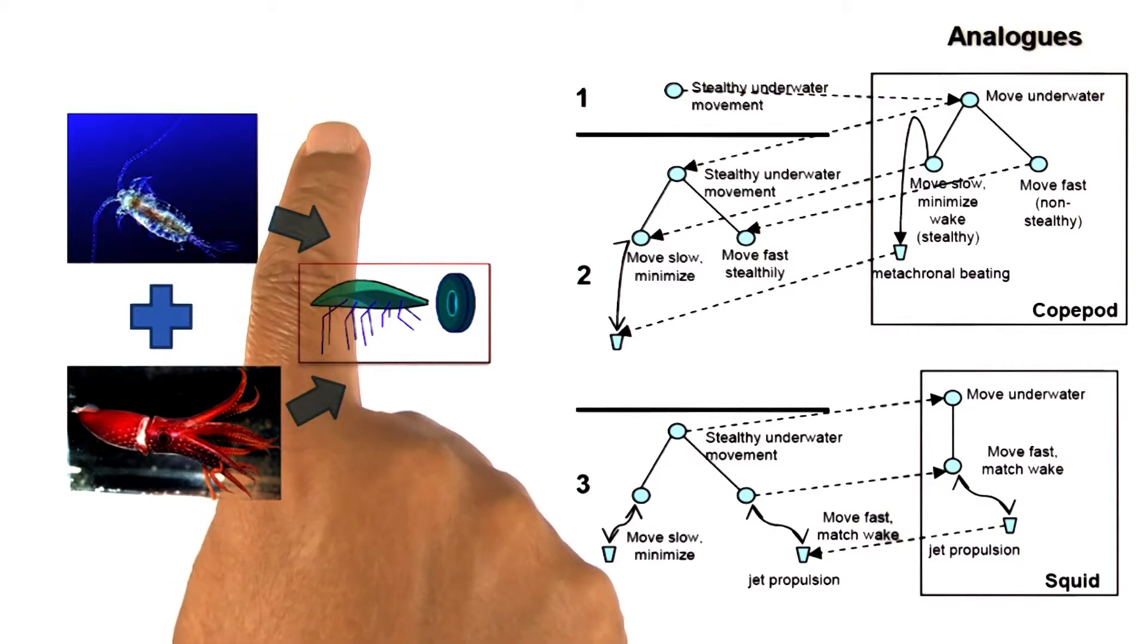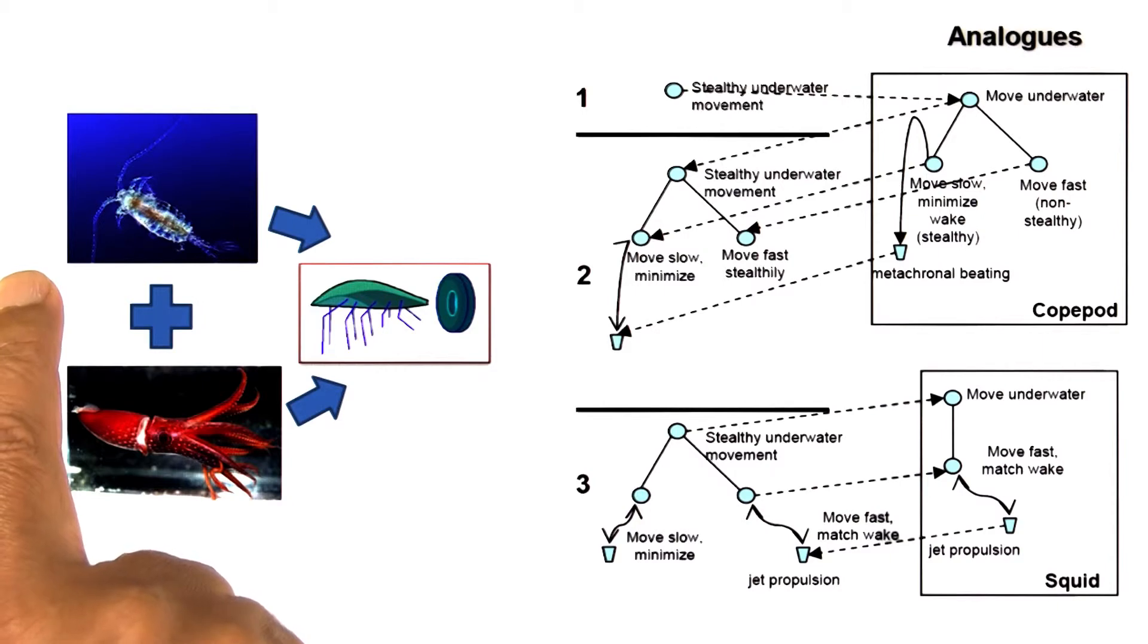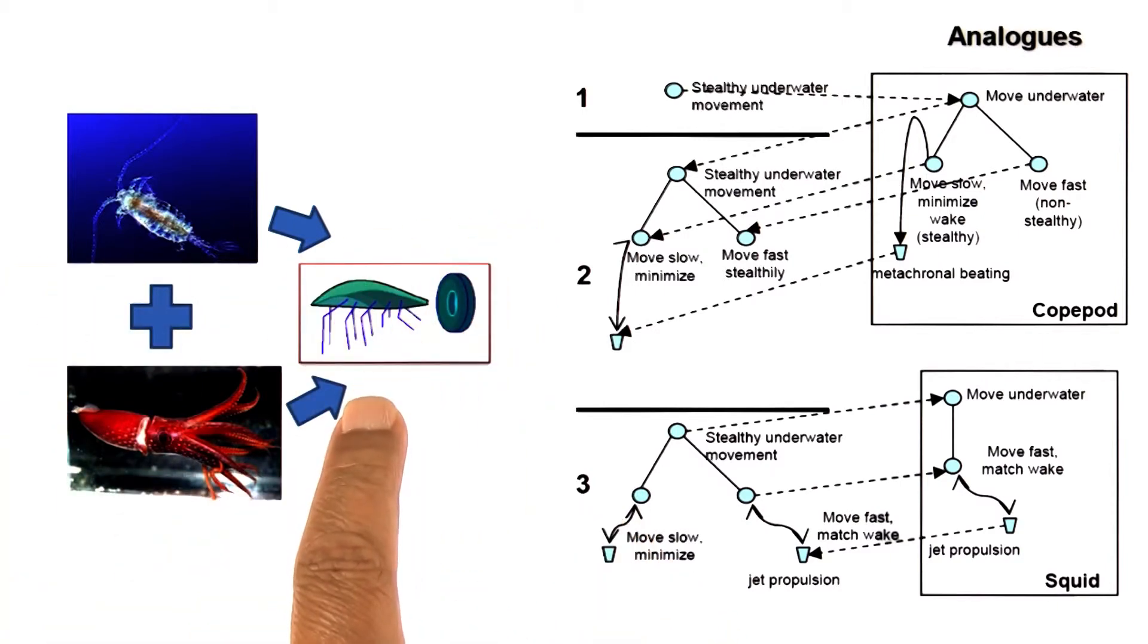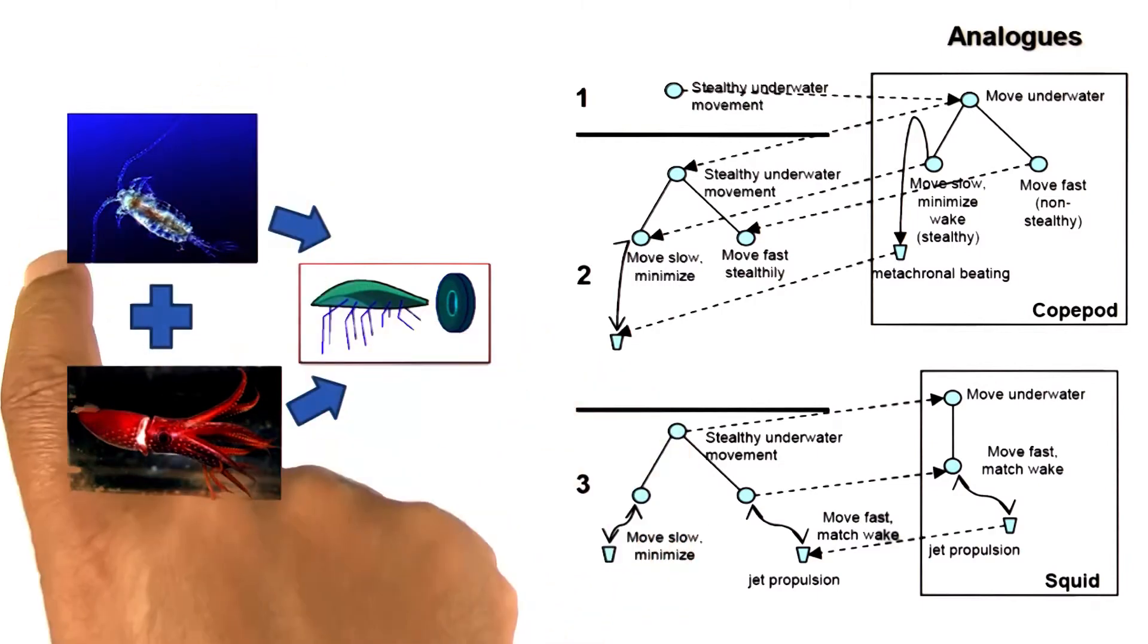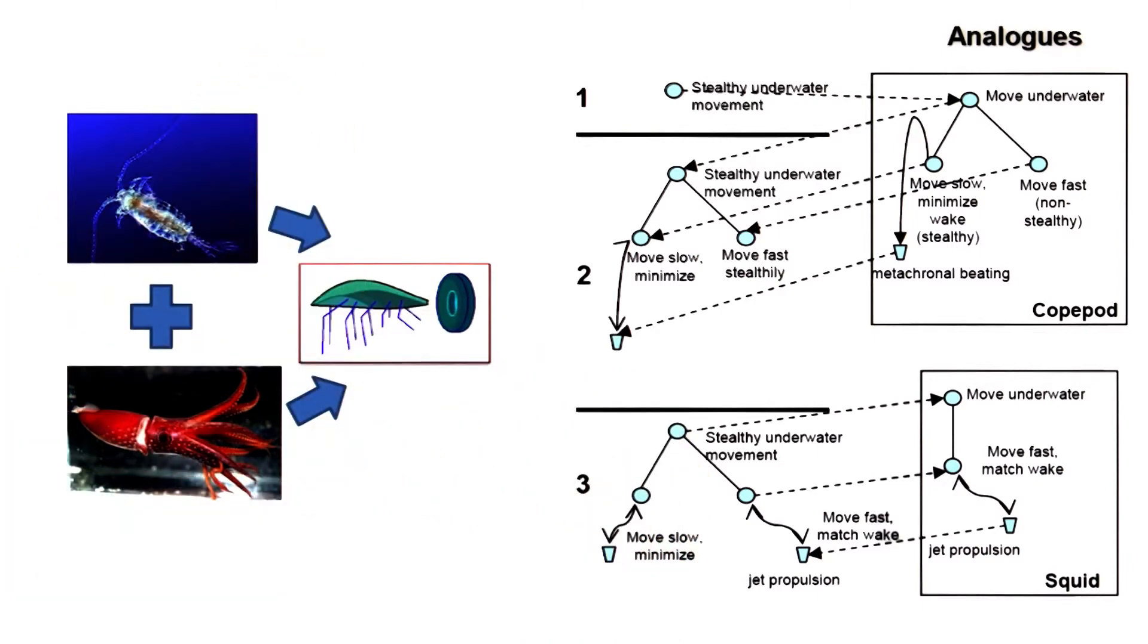Analogical transfer of knowledge about this particular copepod gives us a design for the microbot for slow velocities. This analogy decomposes our original design problem.